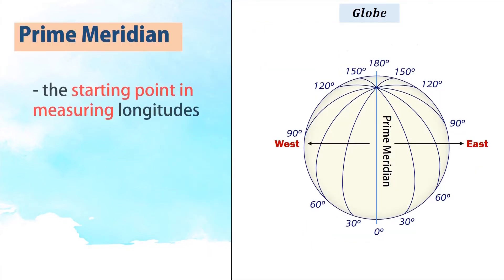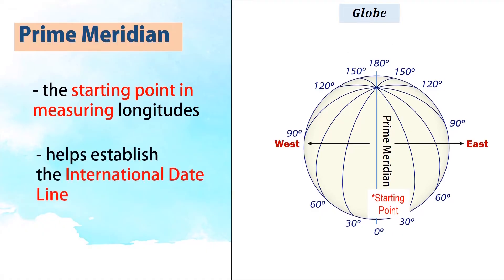The prime meridian is the starting point in measuring longitudes. Also, the prime meridian helps establish the international dateline.